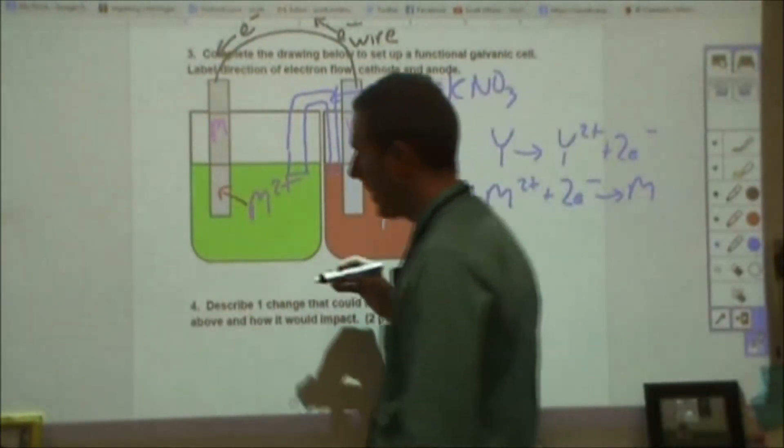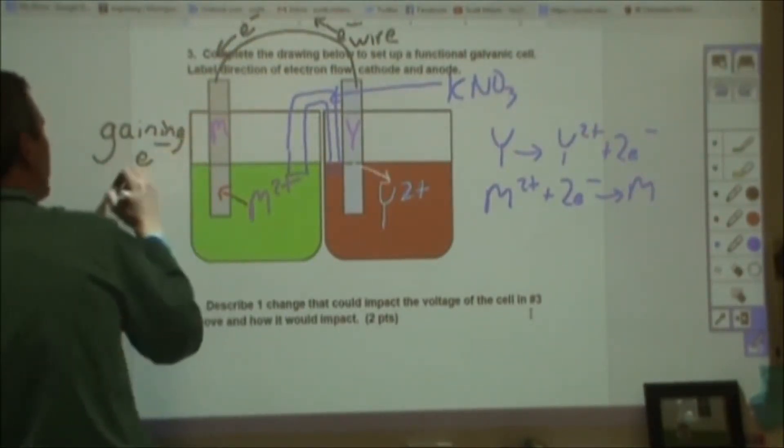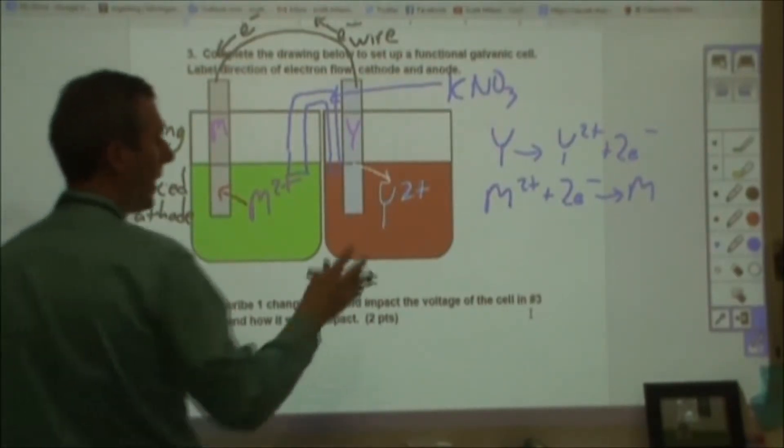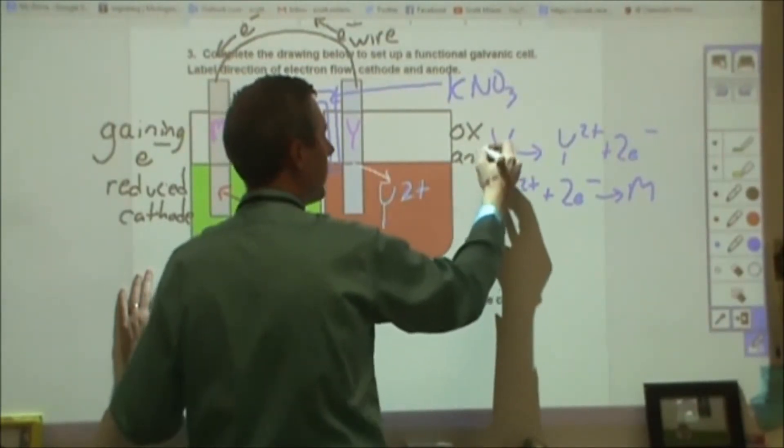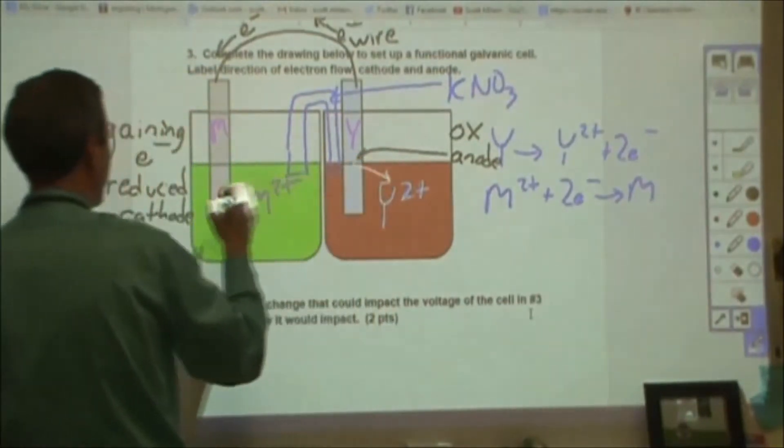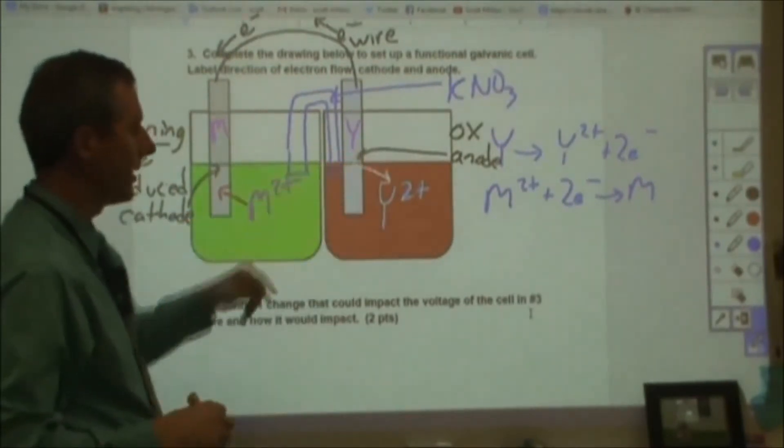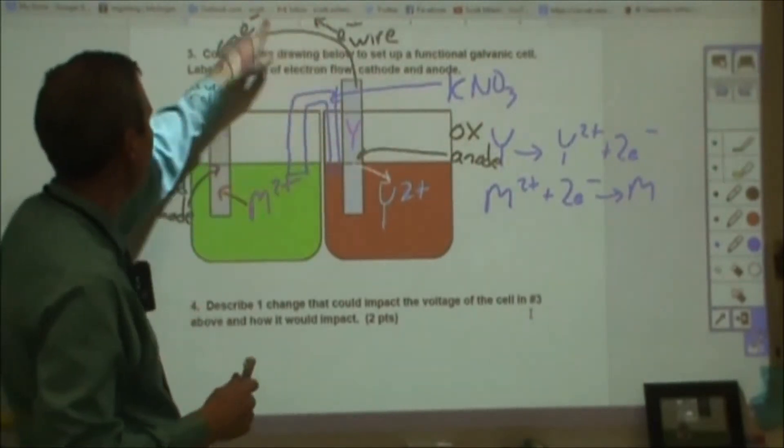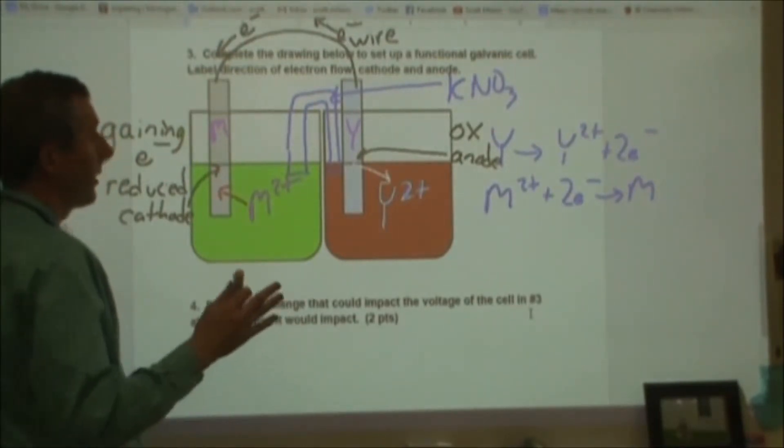So what we have happening is we have over here, we are gaining the electrons. So we're seeing that the M2+ is being reduced and so that would be then our cathode. On this side on the other hand, this is where our oxidation is occurring. We're losing the electrons and so therefore this would be the anode. Now the anode refers specifically to the electrode. The cathode refers specifically to the electrode. So the M metal is the cathode, the Y metal is the anode where those are occurring. It says label direction of electron flow. They would flow from the anode to the cathode, of course.